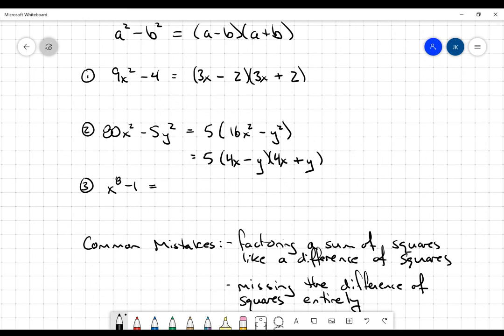Now, one of the things you've got to watch out for is when you get a question like this, x to the 8 minus 1. Well, that is a difference of squares. That will be x to the 4th minus 1 multiplied by x to the 4th plus 1.